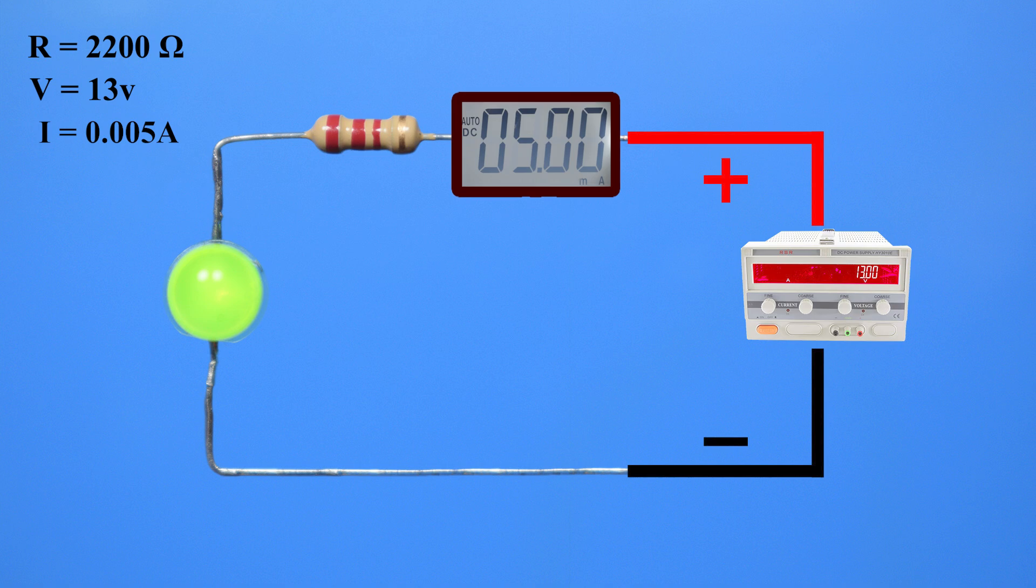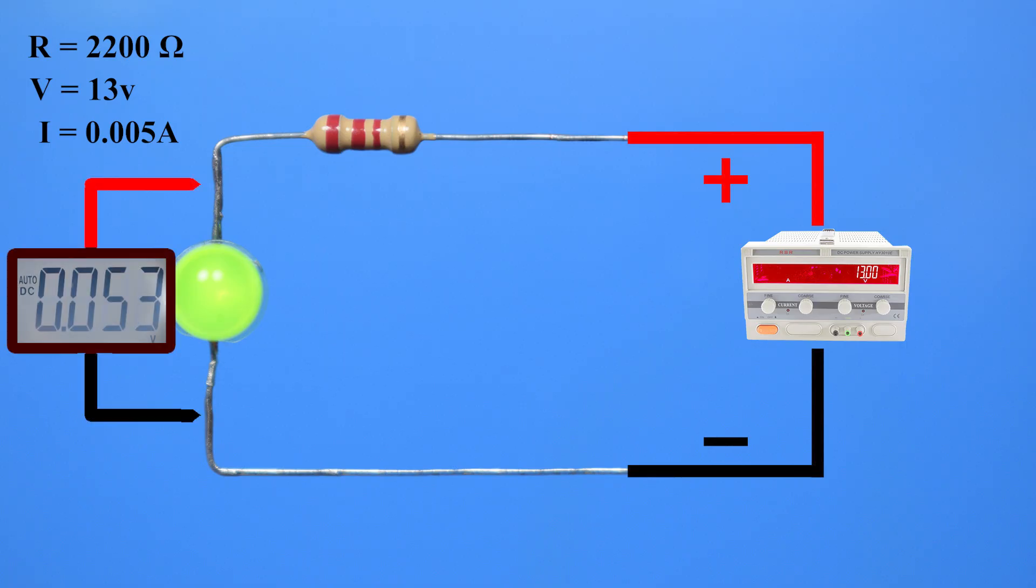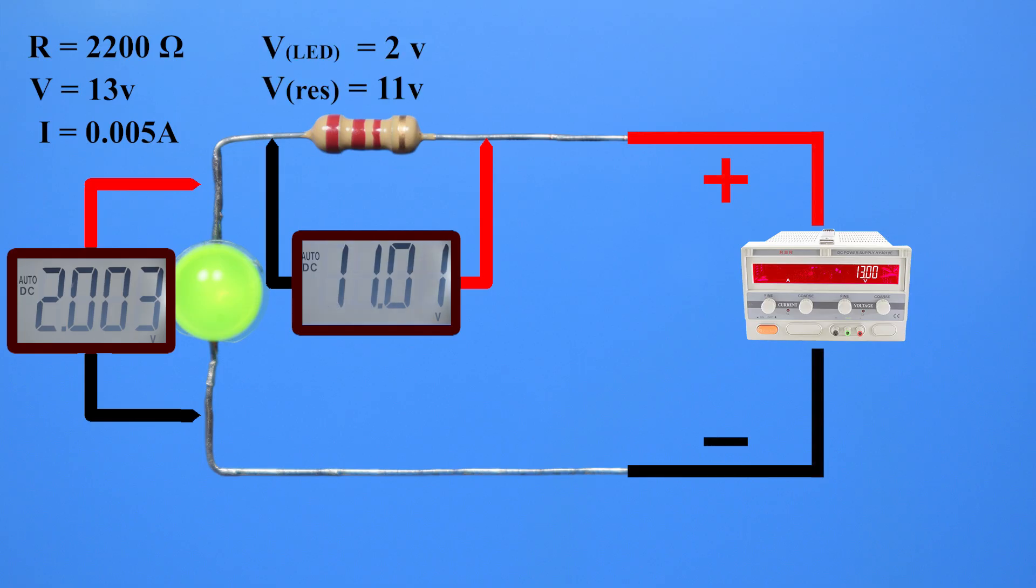Next, let's measure the voltages. The voltage across the LED is about 2 volts and the voltage across the resistor is about 11 volts.